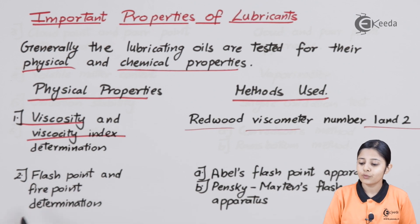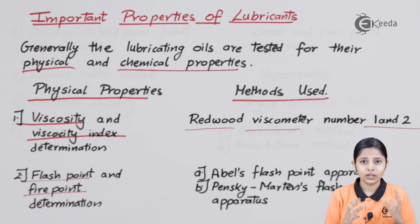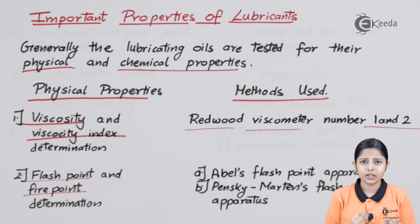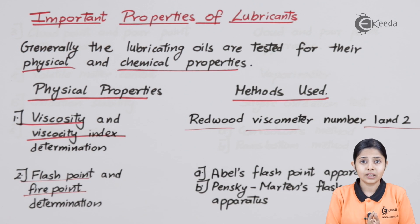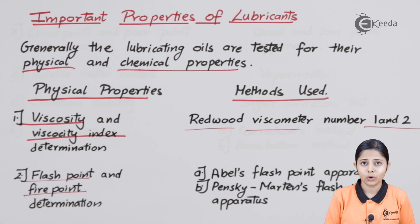Moving ahead we have flash point and fire point determination. The flash point or fire point is the temperature at which oil will start to combust. Oil can be extremely combustible — when exposed to atmospheric oxygen and heated to a high temperature it may catch fire. We do not want oil used as a lubricating material to catch fire inside a machine, as that destroys the entire machinery and its delicate parts.